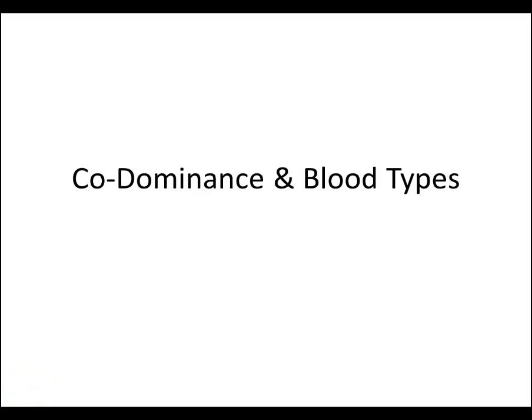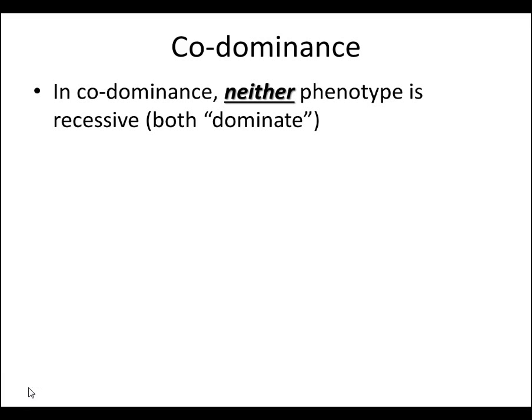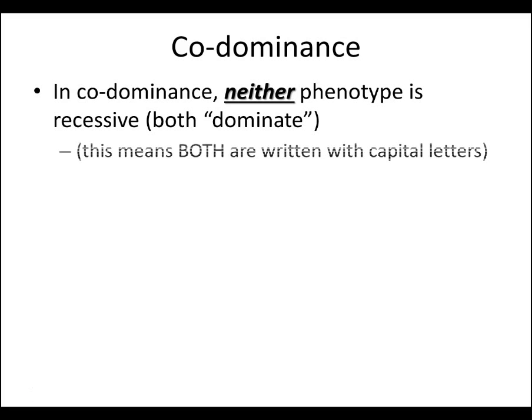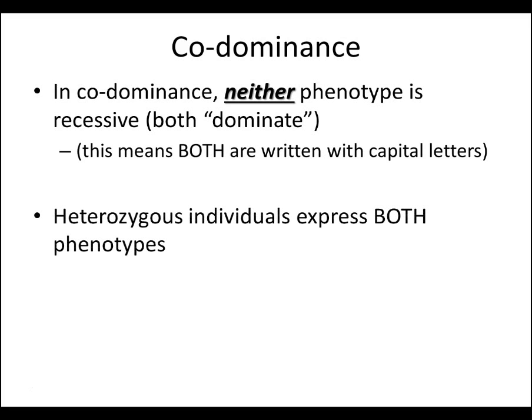Let's talk codominance and blood types, which is a type of codominance. In codominance, neither phenotype is recessive. Previously, we'd see it's either one or the other, or sometimes there's a blend. In this case, neither one is sitting this out — they both dominate, so you would typically write these with all capital letters.